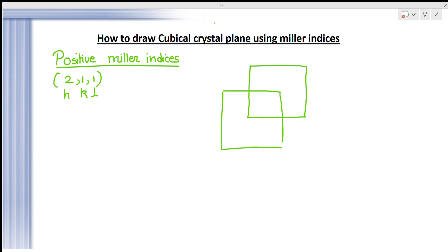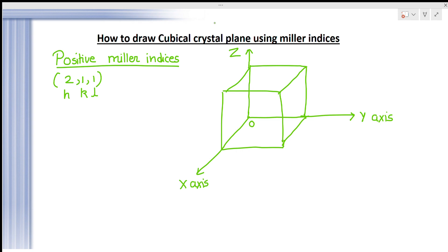You will have to draw a cube. This will be the Z axis, this will be the Y axis, and this will be our X axis. This will be the point of origin. Now we have given the Miller indices 2, 1, 1, and we want to find the points of intersection on the X, Y, and Z axes. For this, you will have to take the inverse of the Miller indices.